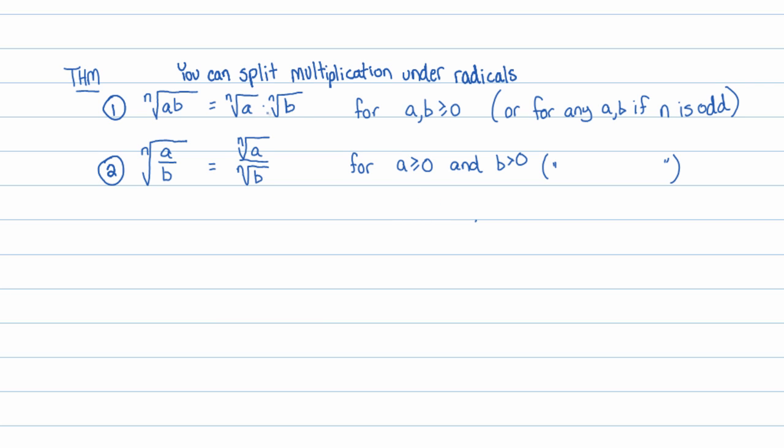And that's actually the theorem we're going to be using the most with radicals when we simplify radicals, is splitting radicals into the product of two other radicals. But something to really note here is that most textbooks say that this split can only occur if a and b are both positive or zero. And it actually is true. You can only do this if a and b are positive most of the time.